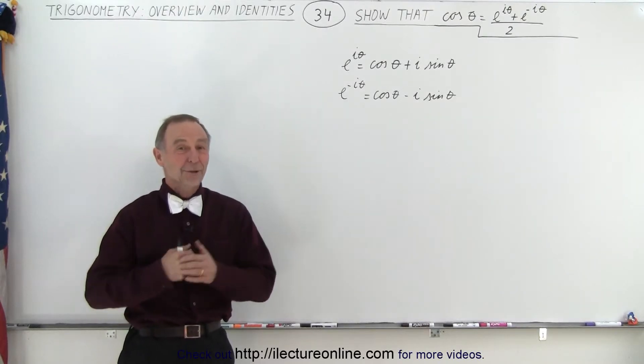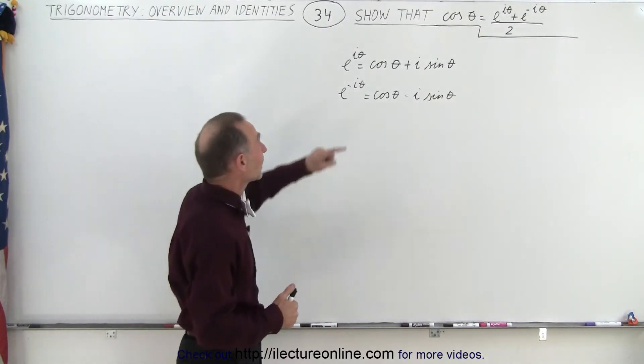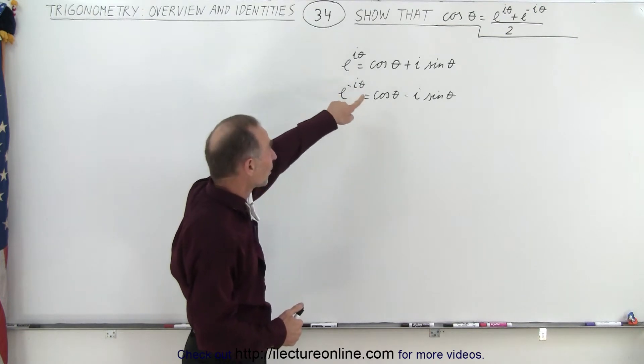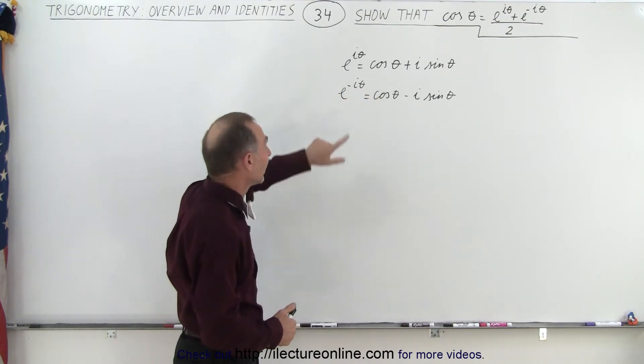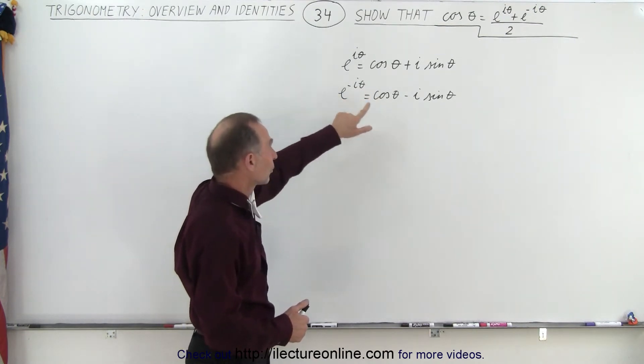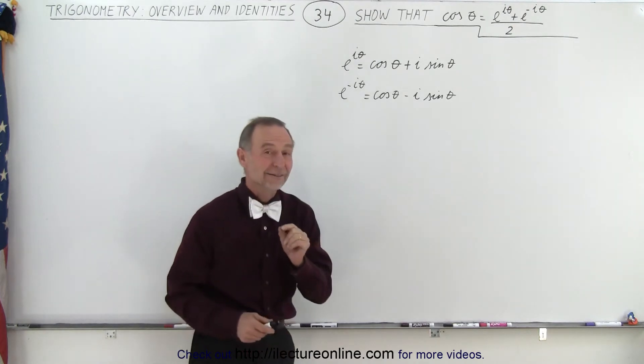Welcome to I Lecture Online. In the previous two videos we showed that e to the i theta equals the cosine of theta plus i sine of theta, and e to the minus i theta equals the cosine of theta minus the i sine theta.